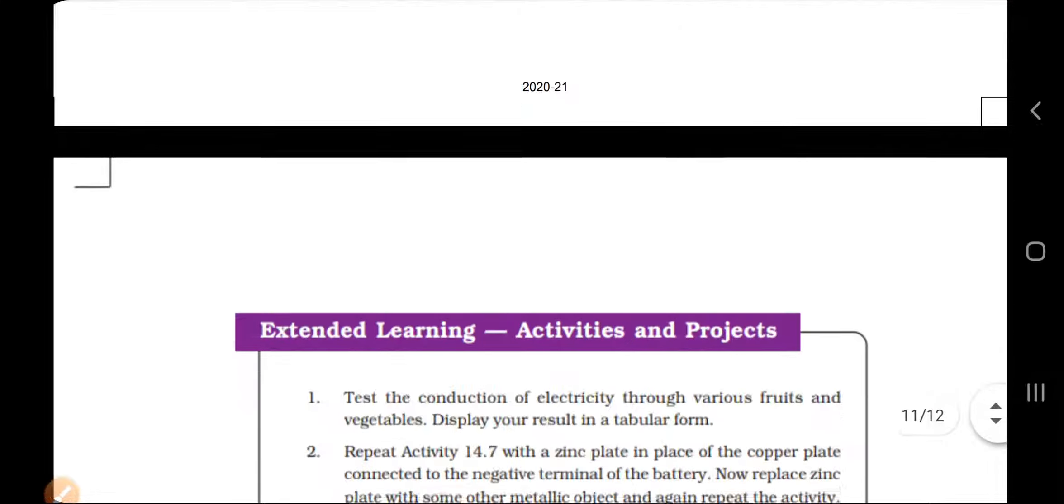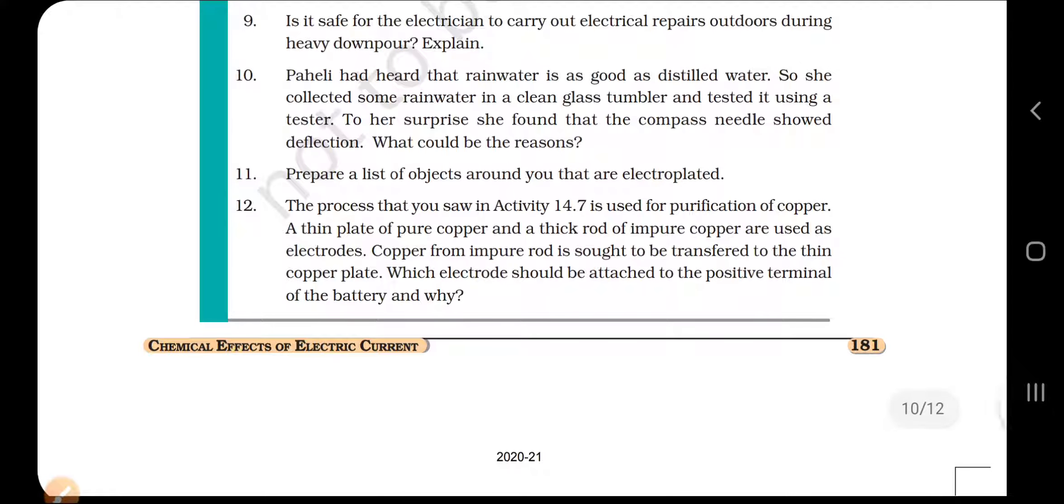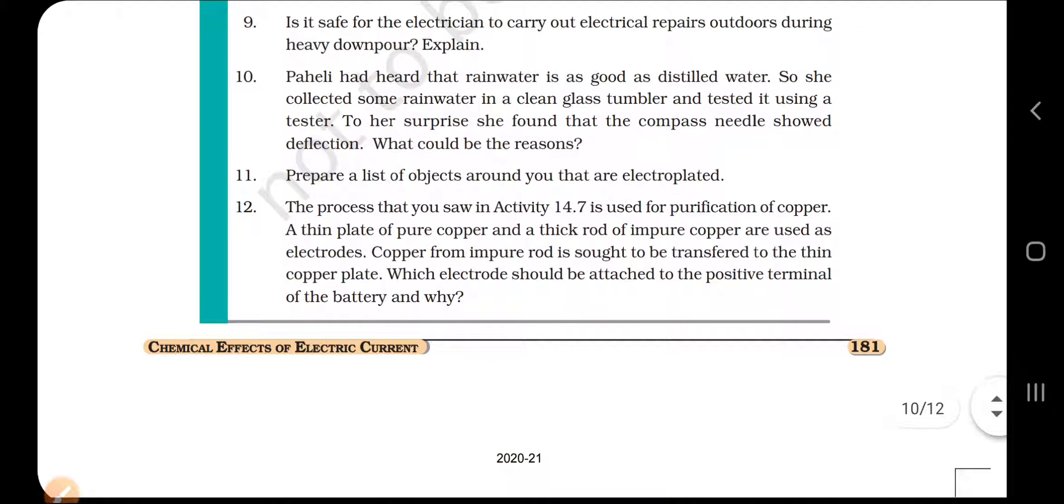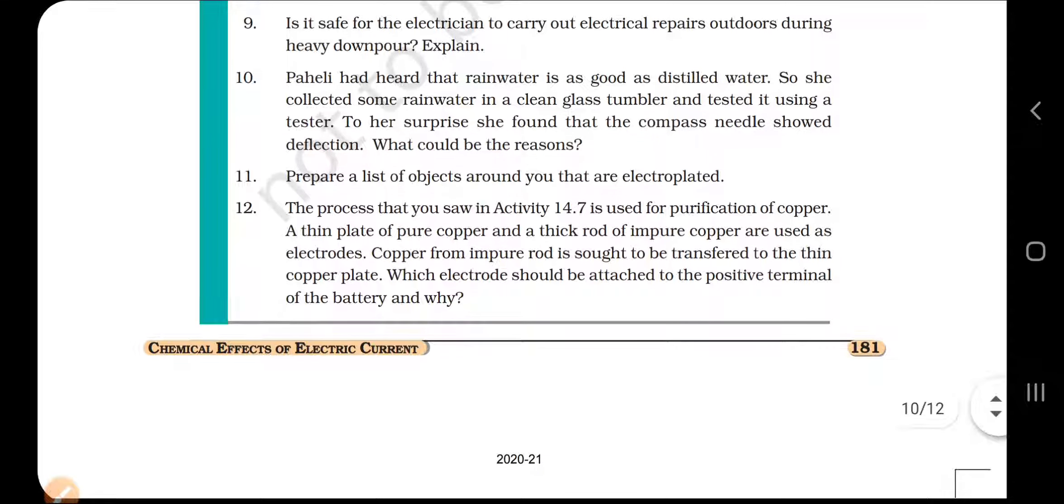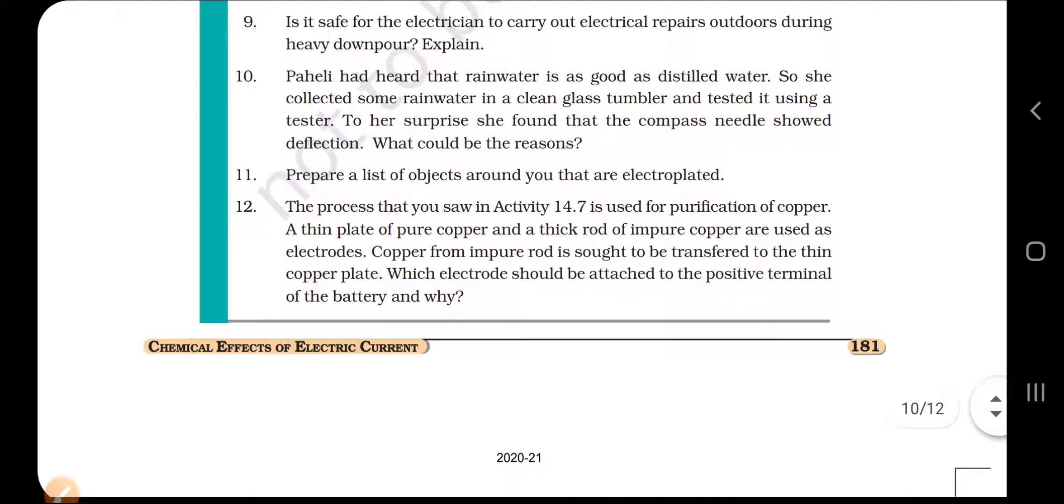Question 12. The process that we saw in activity 14.7 is used for purification of copper. A thin plate of pure copper and a thick rod of impure copper are used as electrodes. Copper from the impure rod is sought to be transferred to the thin copper plate. So what should be attached to the positive terminal of the battery and why?